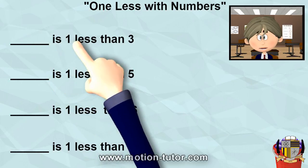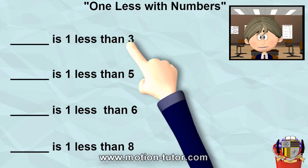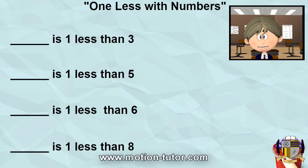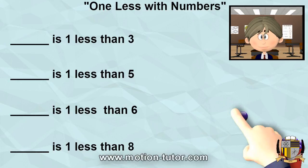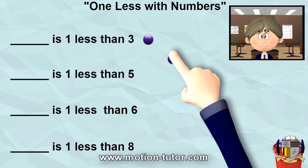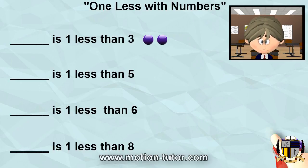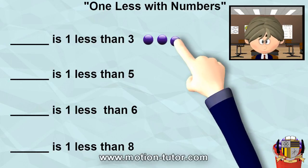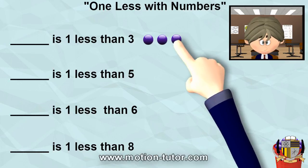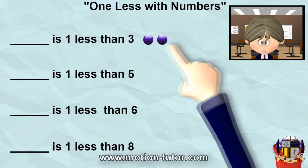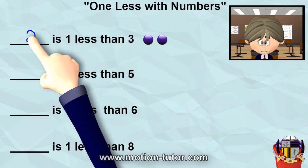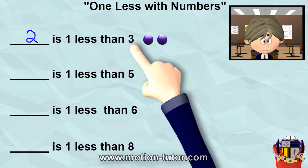Something is one less than three. How do we figure that out? So let's get three and take a look at it. We have three, and then something is one less than three. One less than three looks like two. So that means two is one less than three.